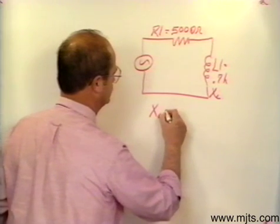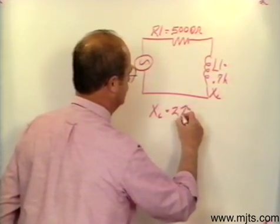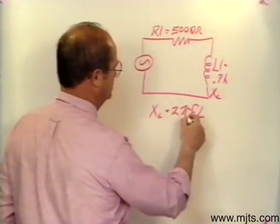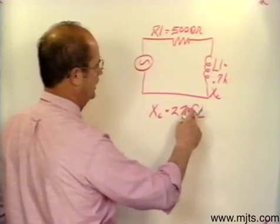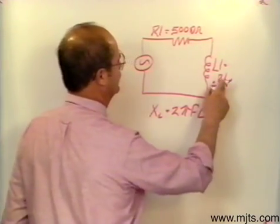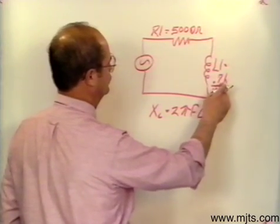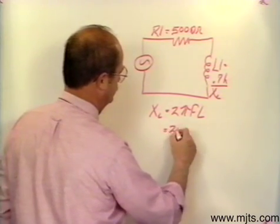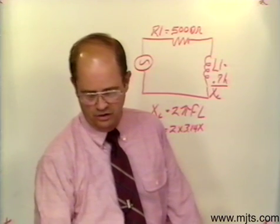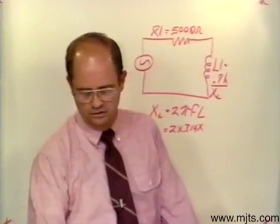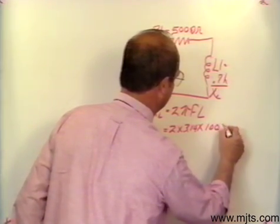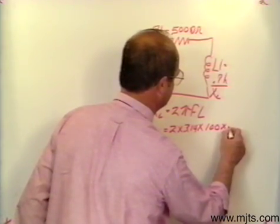The formula for inductive reactance is equal to 2πFL. We take 2 times pi, which is a constant, 3.14, times F, which is our frequency, times L, which is the value of the inductor in Henrys. Had this been in milli-Henrys, we would have to convert to Henrys. So we have 2 times 3.14 times the frequency — in this case, 100 cycles — times the inductor value of 0.7.